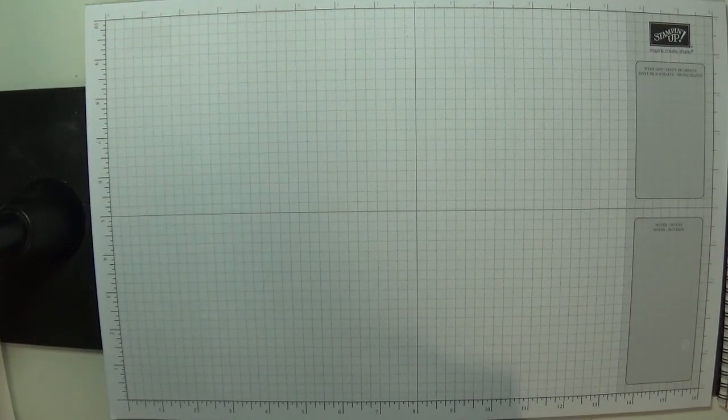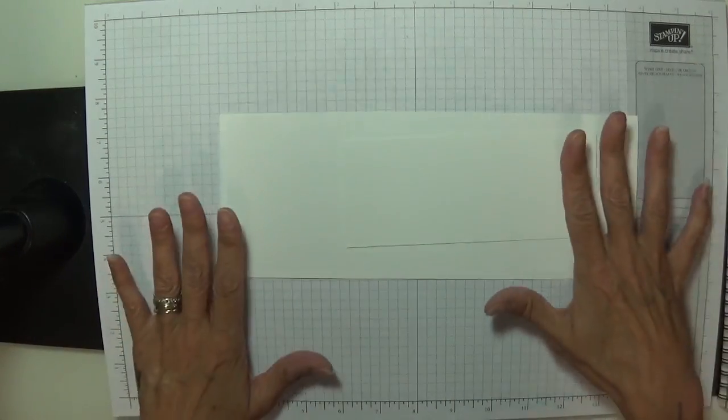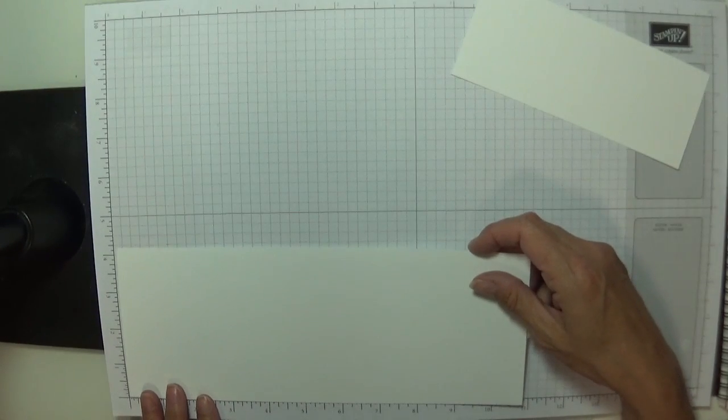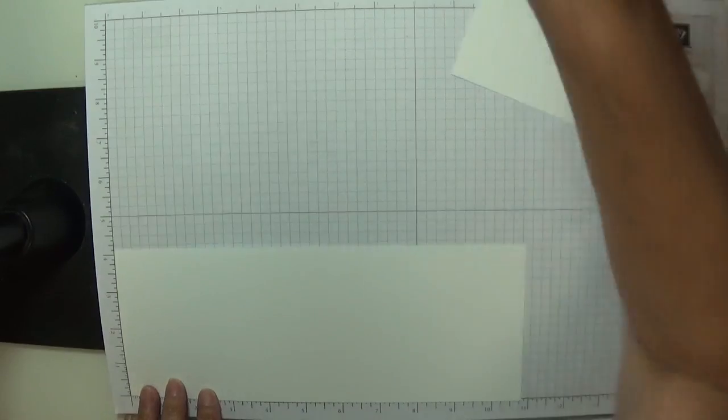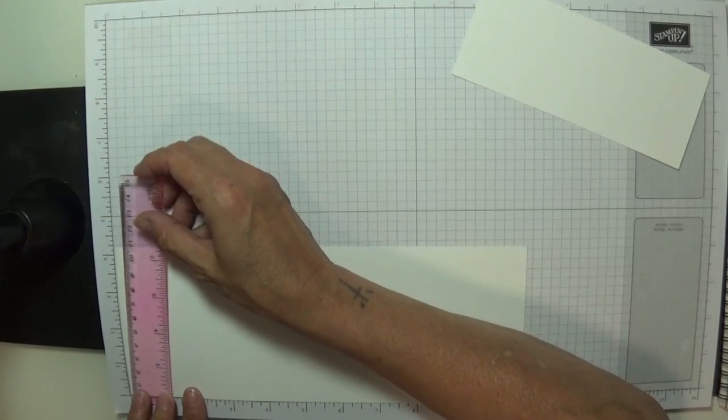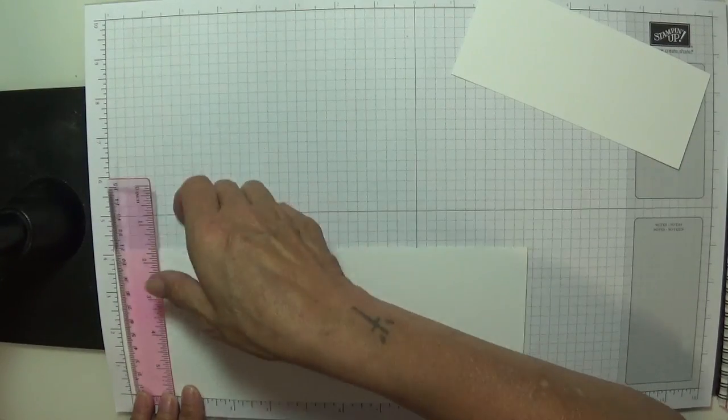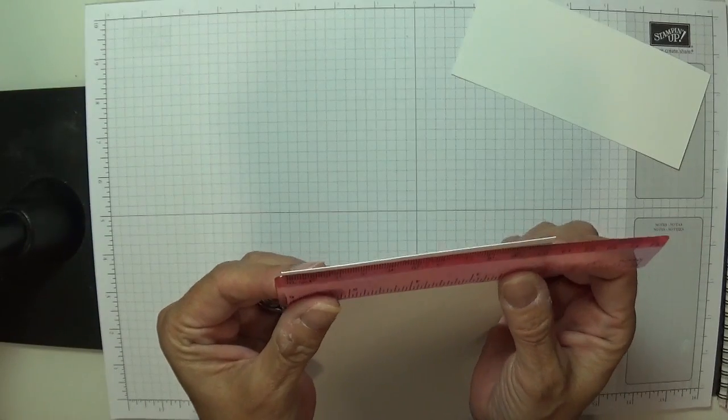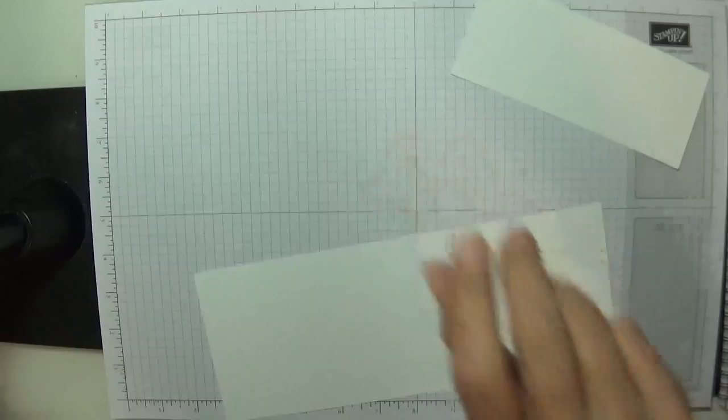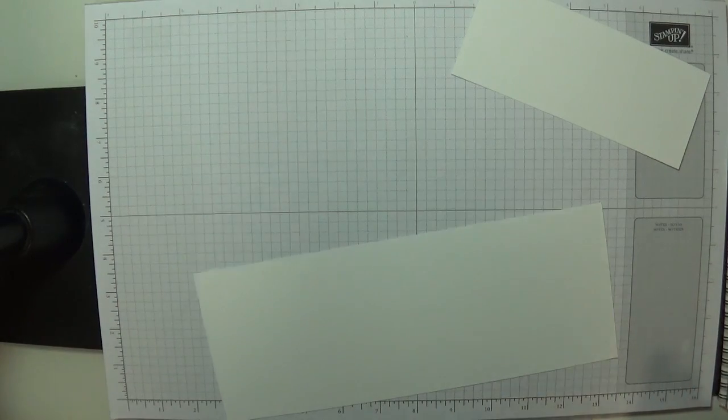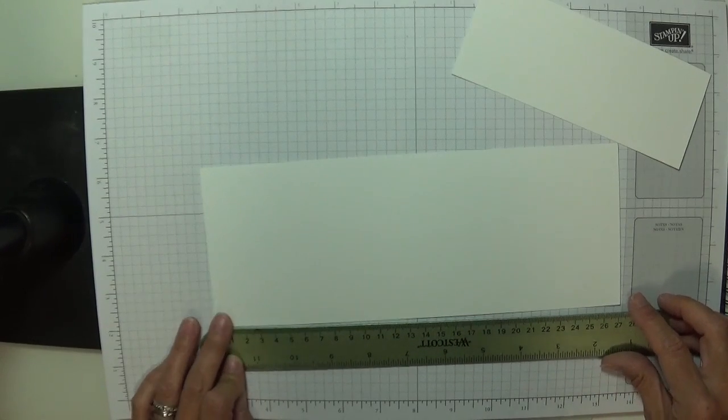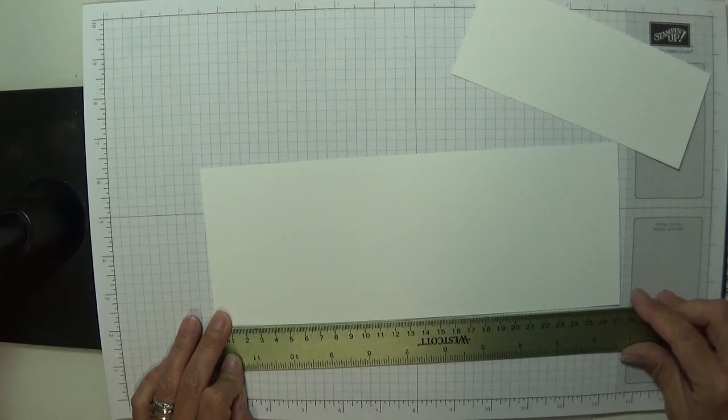You're going to need some Whisper White. You're going to need one piece which is four and an eighth by ten and three quarters. That is ten point five by twenty seven point three. So these are the two main pieces you're going to need for your card.